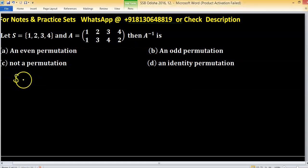In this problem, a set S is given to you and symbols are represented by numbers 1, 2, 3, and 4. We have a permutation denoted by A.